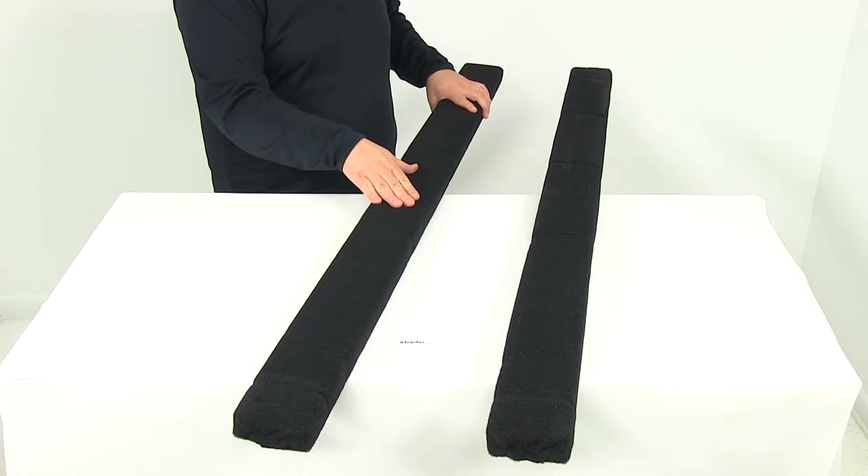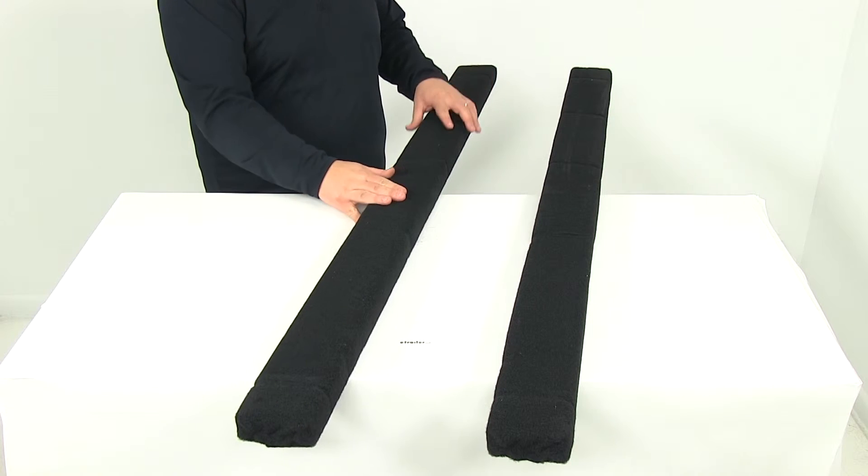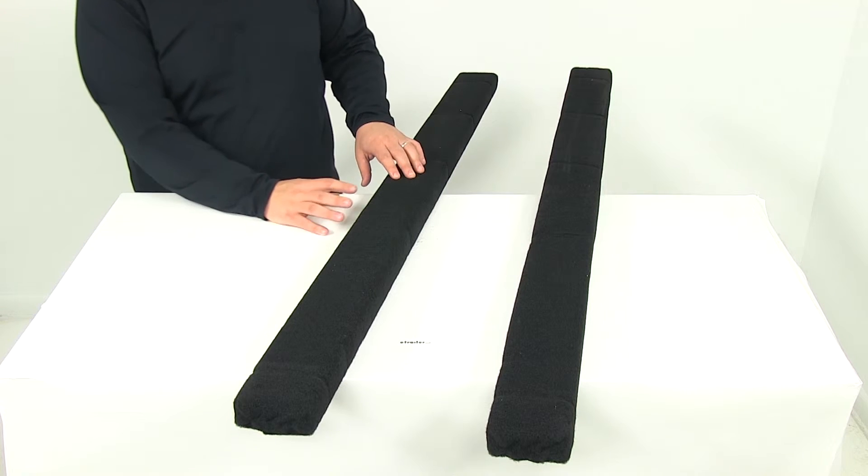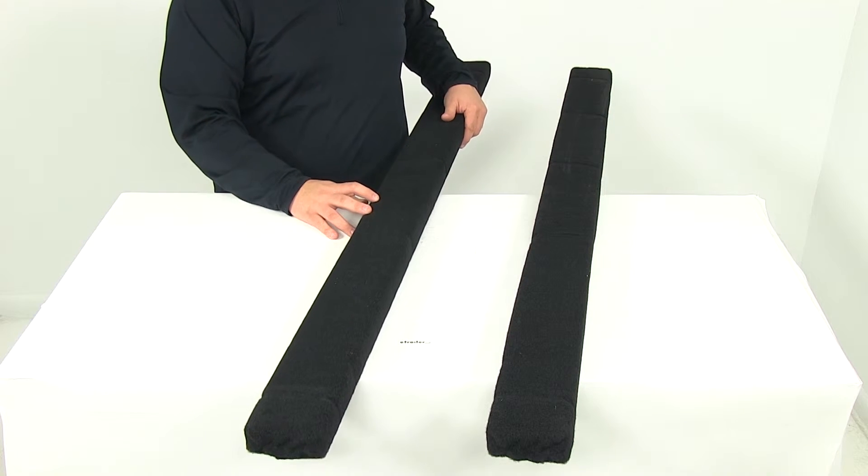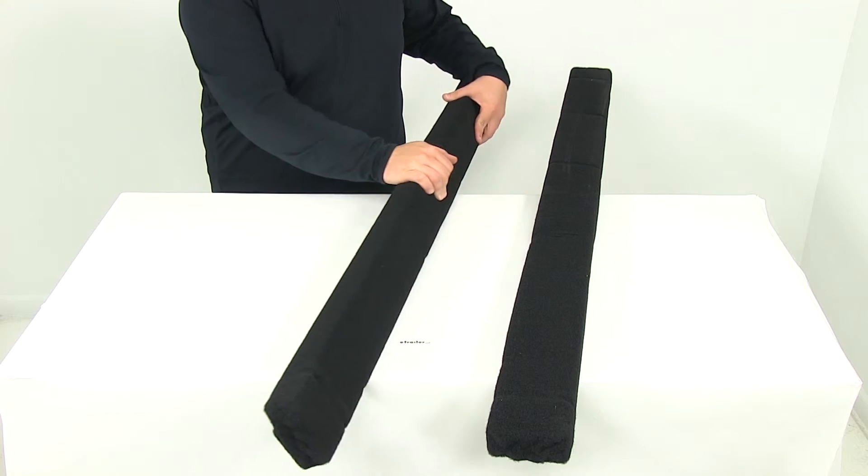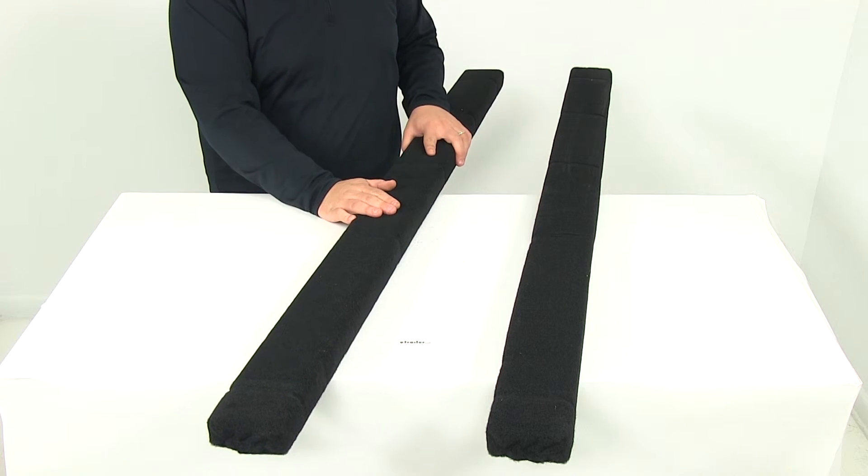Now the neat thing about these boards, just like any bunk board, is that you can run the bunk boards front to back for traditionally shaped hulls, or you can run these side to side for flat bottom boats, kayaks, or inflatables. You can lay them flat, or you can stand them upright. That's going to be totally up to you depending on your application and what works best.